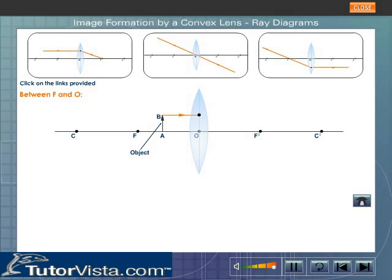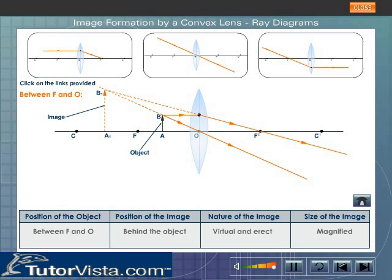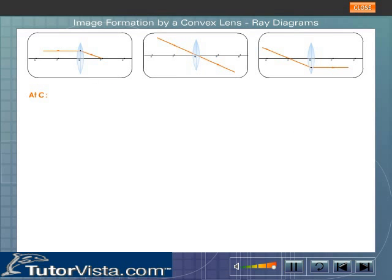A ray of light parallel to the principal axis after refraction passes through the focus F'. A ray of light passing through the optical center of the lens travels straight without suffering any deviation. These refracted rays appear to meet only when extended backwards. Thus, when an object is placed between F and O of a convex lens, a virtual, erect, and magnified image is formed behind the object.